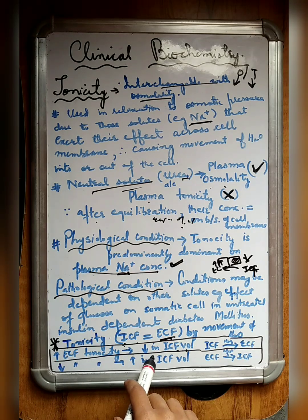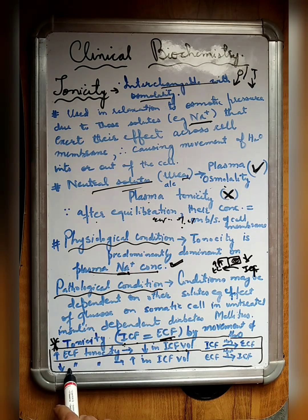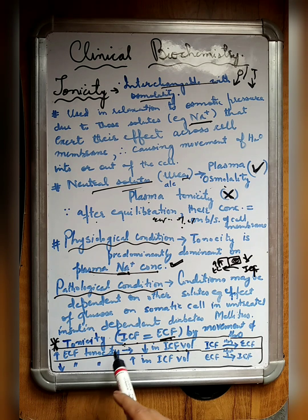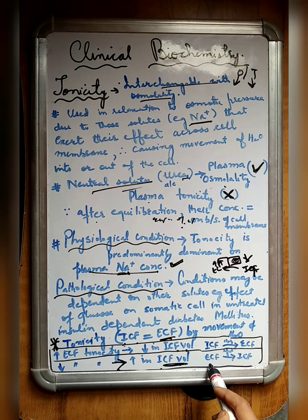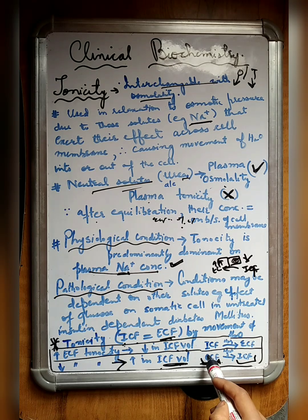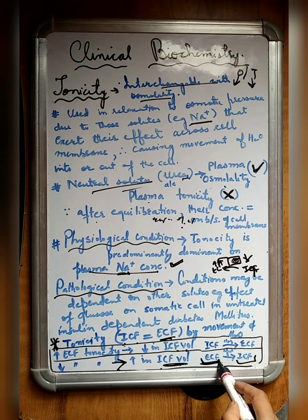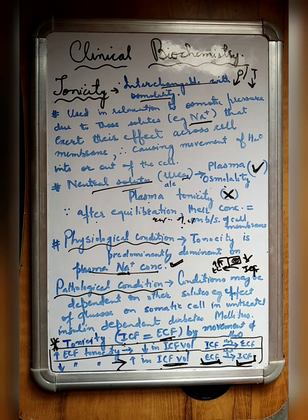So they have an inverse relationship. Vice versa, decreasing ECF tonicity will result in an increase in ICF volume, because water will travel from the ECF towards the ICF. Hence, the volume of fluid or water will decrease from the ECF and increase in the ICF. Thank you.